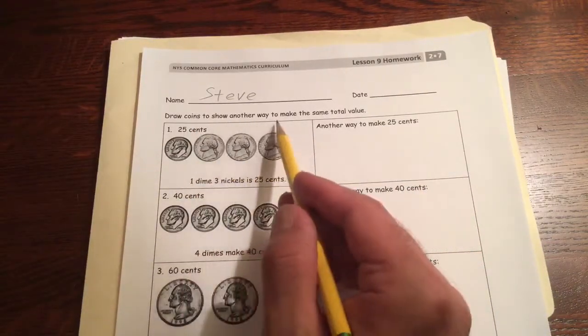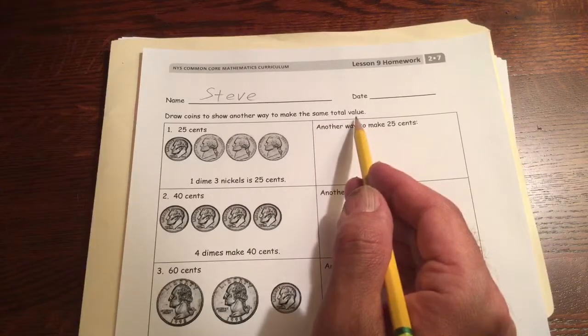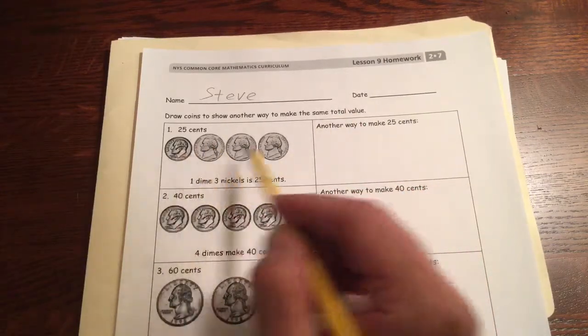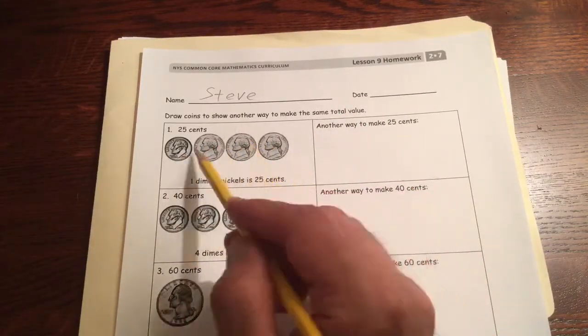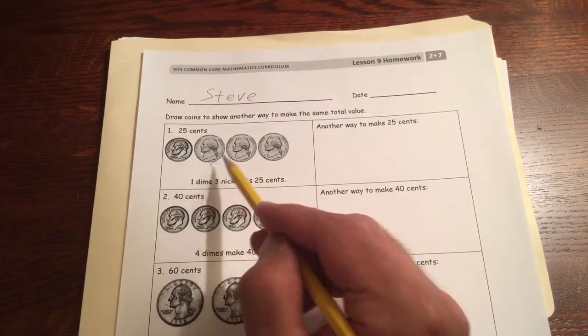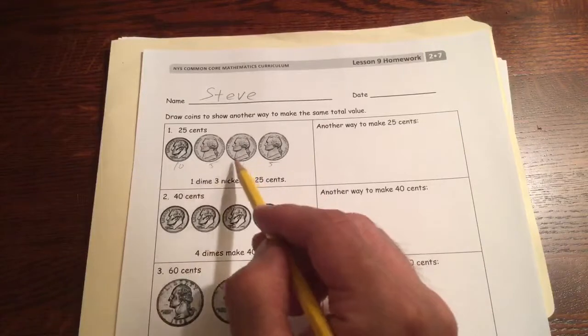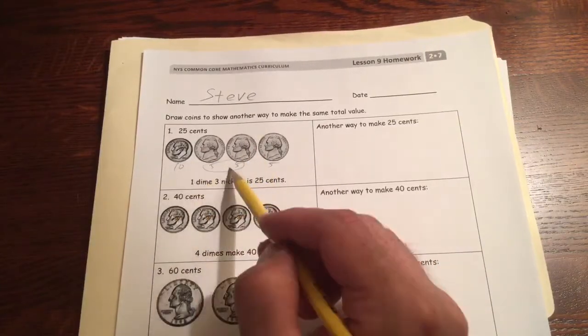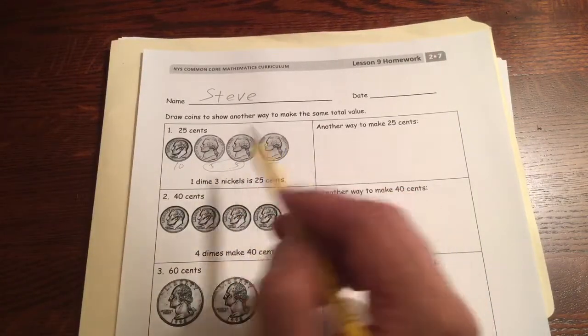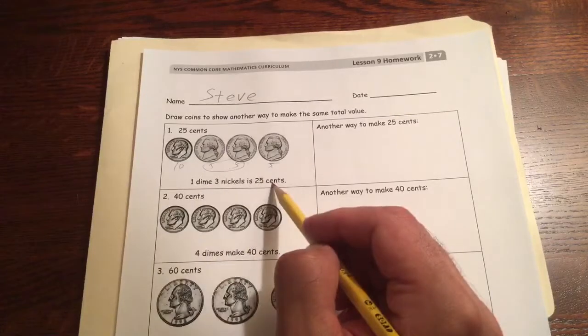Draw coins to show another way to make the same total value. So here we have 25 cents. These are nickels, so those are fives. That's a 10. Two fives makes a 10. 10, 20, 5. One dime and three nickels is 25 cents.